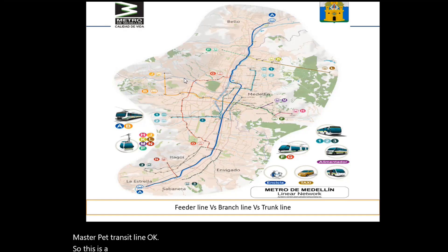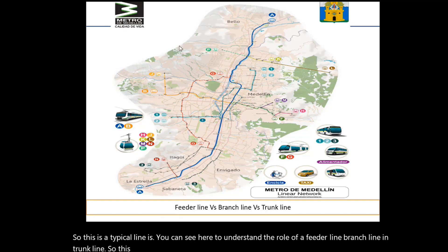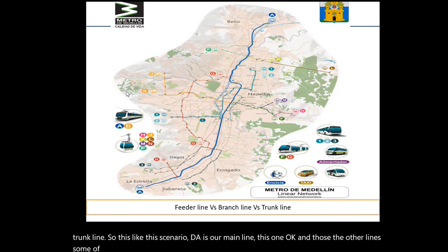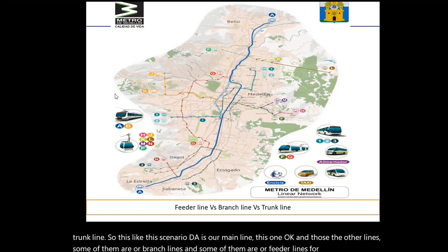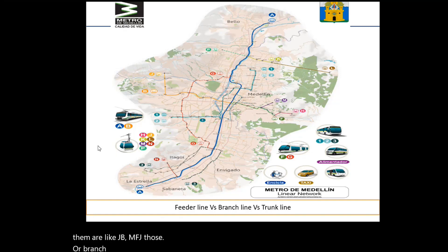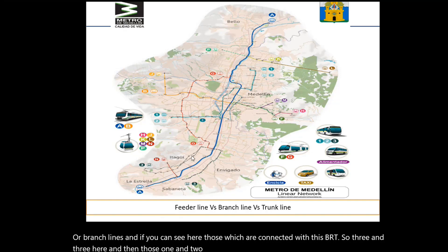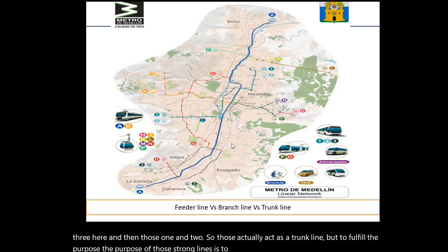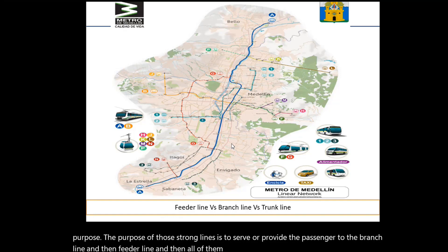This is a typical diagram to understand the role of a feeder line, branch line, and trunk line. In this scenario, A is our main line, and the other lines are either branch lines or feeder lines. Lines such as J, B, M, F, H are our branch lines. Those connected with the BRT — lines 1, 2, and 3 — act as trunk lines. The purpose of those trunk lines is to serve passengers to the branch lines and then feeder lines, and all of them act as one body — a feeding body — which provides its services to the mass rapid transit line.